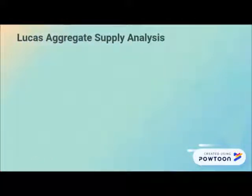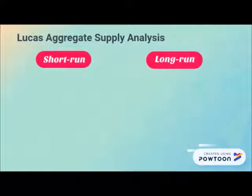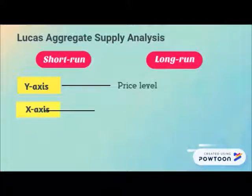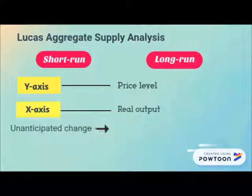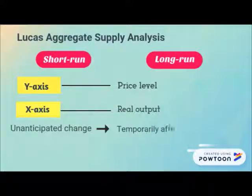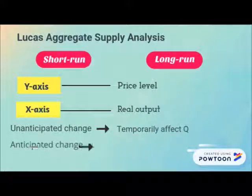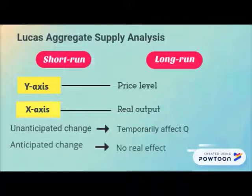Lucas's analysis distinguished between short-run and long-run aggregate supply. The Y-axis measures price level and the X-axis measures real output. In the new classical model, an unanticipated change in aggregate demand does affect the level of real output, but only temporarily, whereas an anticipated change has no effect on output or employment.